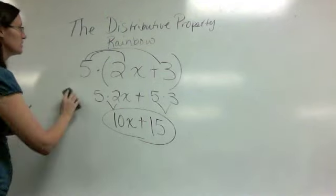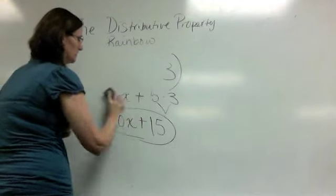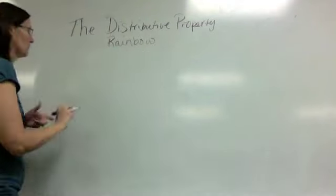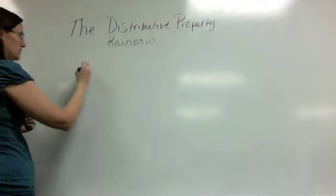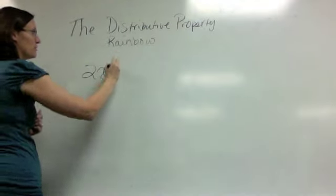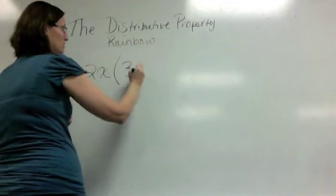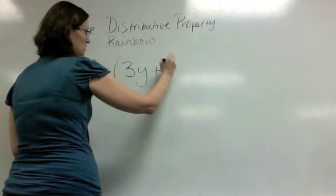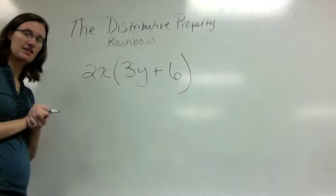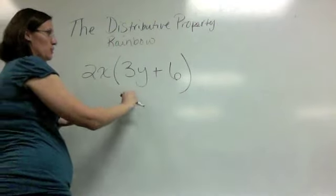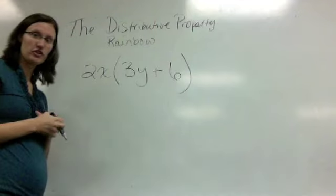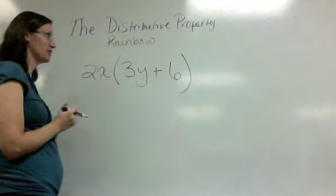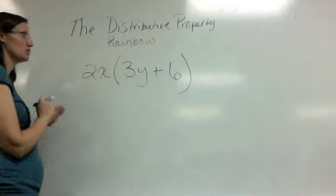We will do one more example. This time we'll put a variable on the outside. In this case, once again, we cannot do what's in the parentheses first. We cannot add those. We cannot take 3y plus 6. They are not like terms. So we move from parentheses to our multiplication.